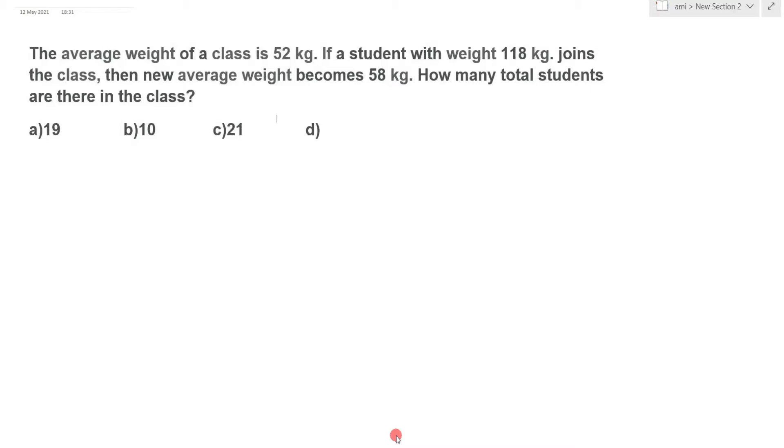The average weight of a class is 52 kg. If a student with weight 118 kg joins the class, the new average weight becomes 58 kg. How many total students are there in the class?